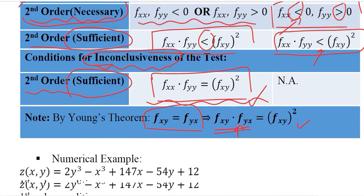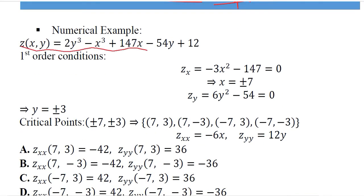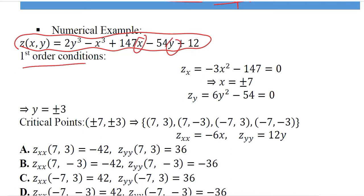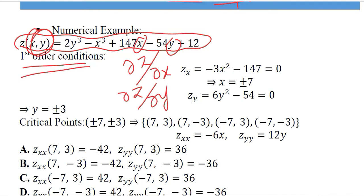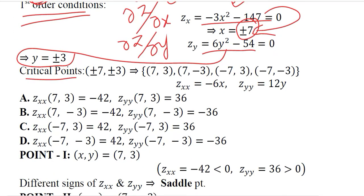We can do a numerical example to see which types of points can exist. A function z is given in terms of x and y variables. For the first order condition, we differentiate z with respect to x and with respect to y respectively. Solving the first equation gives values of x equal to plus or minus 7, and solving the second gives values of y equal to plus or minus 3. The critical points are therefore (±7, ±3).